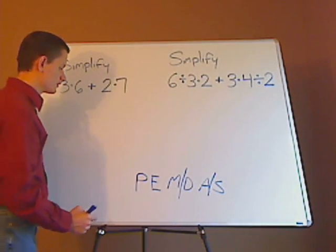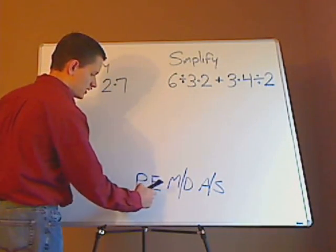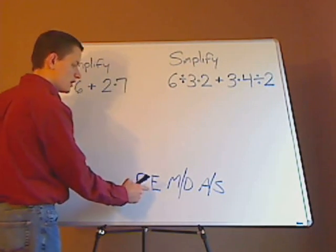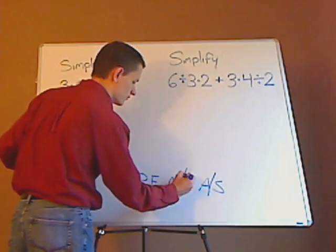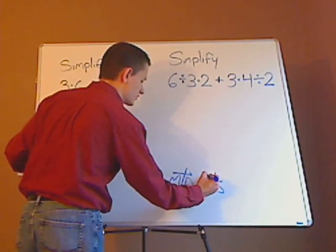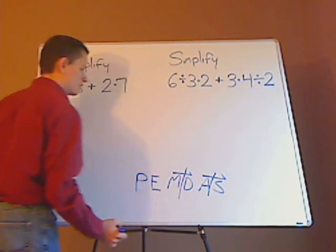Notice how I wrote this. You have PE, that's parentheses, then you do exponents, then you do multiplication slash division from left to right, and then you do addition subtraction from left to right.